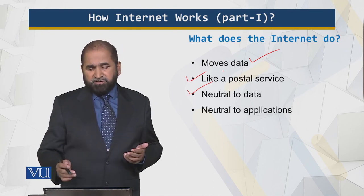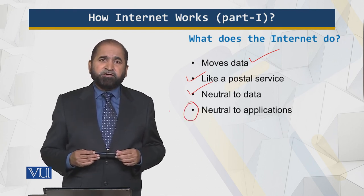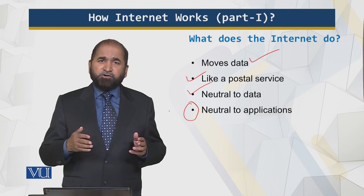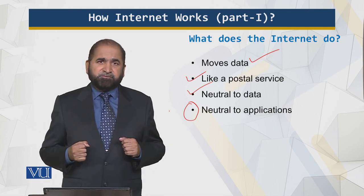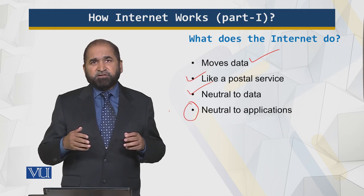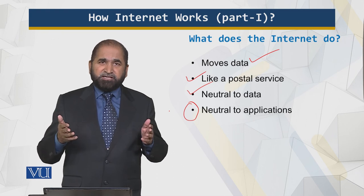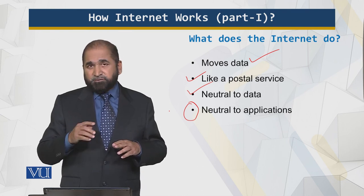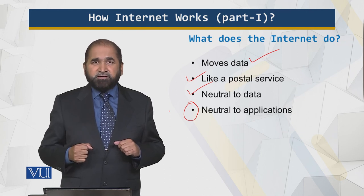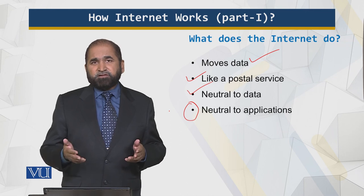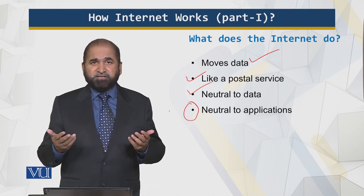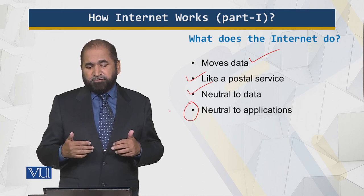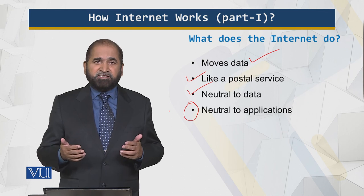Finally, the internet is neutral to applications. For example, Skype was developed by two European developers who didn't have to change the internet or any protocols — they built Skype on top of standard internet protocols. This openness and neutrality means applications like Skype, WhatsApp, and many more can all run on the internet, to our benefit.